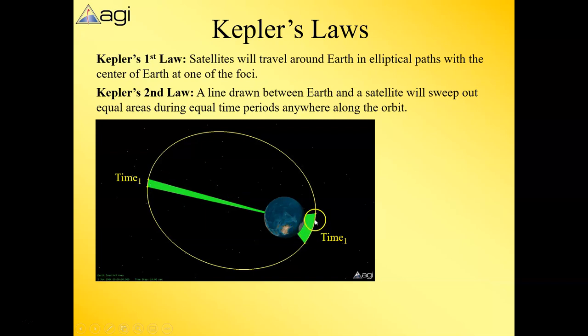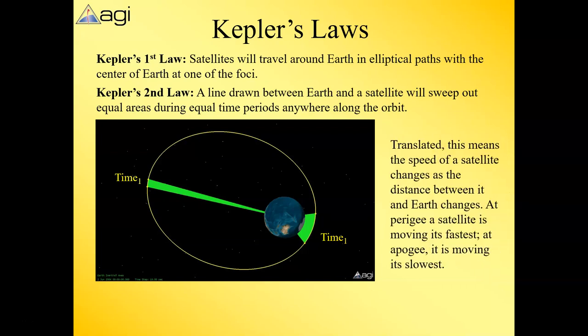If you look at the green area here, the green area on the right is the same as the green area on the left. Pretty amazing that he figured that out. Really, all that means is it goes faster when it's closer to perigee than it does at apogee.